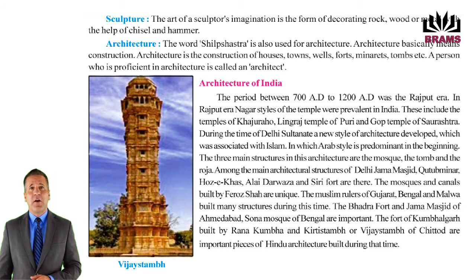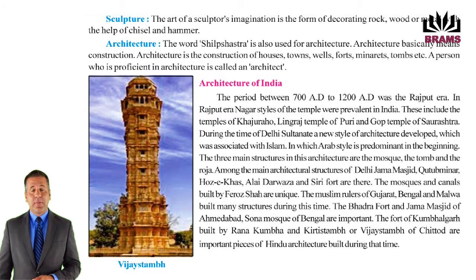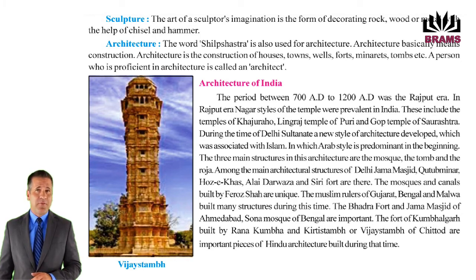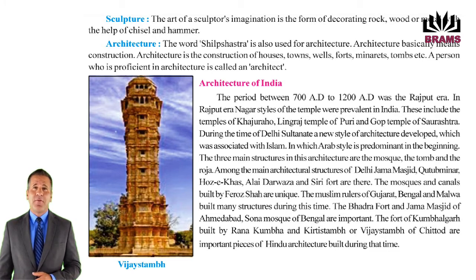Architecture of India: The period between 700 AD to 1200 AD was the Rajput era. In the Rajput era, the Nagar style of temples was prevalent in India. These include the temples of Khajuraho, the Lingaraj temple of Puri, and the Gop temple of Saurashtra. During the time of the Delhi Sultanate, a new style of architecture developed which was associated with Islam, in which the Arab style was predominant in the beginning. The three main structures in this architecture are the mosque, the tomb, and the roja. Among the main architectural structures of Delhi — Jama Masjid, Qutab Minar, Hauz Khas, Alai Darwaza, and Siri Fort are prominent.